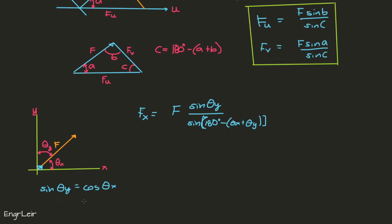This is from the trigonometric identity that the sine of theta y is equal to the cosine of 90 degrees minus theta y, which is the complement of theta y, which in this case is theta x. It's 90 minus theta y, so theta x is 90 minus theta y. So we have this property.